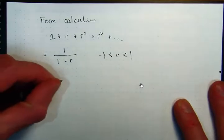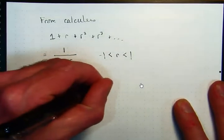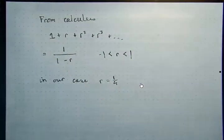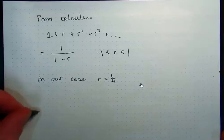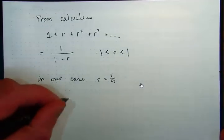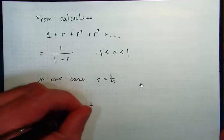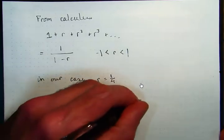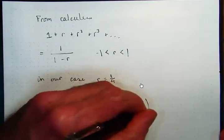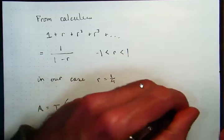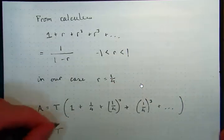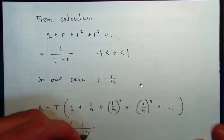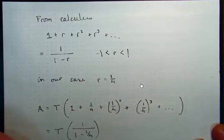In our case, r equals one quarter. The common ratio is what you're multiplying by to get from one term to another. So this area that we decided was the area of the original triangle plus this sum. Well, since our common ratio is one fourth, we'd have one over one minus one fourth.